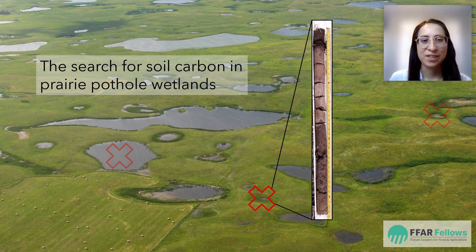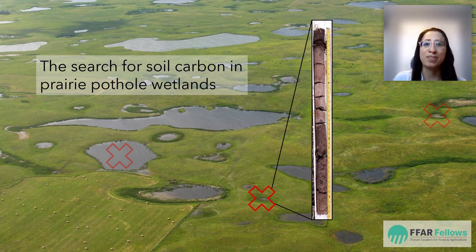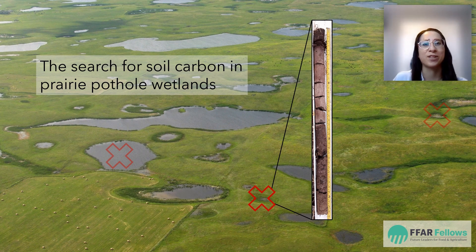Imagine you're on a treasure hunt. The map you are given has a couple places where X marks the spot and you'll find buried treasure. One of the places may have just a few coins while another place has the jackpot you've been dreaming of. But how will you know which X on the map has the treasure that you're looking for? This uncertainty is often felt when we're trying to figure out how much carbon is in the soil, and sometimes we're even missing the treasure map that tells us where to look.